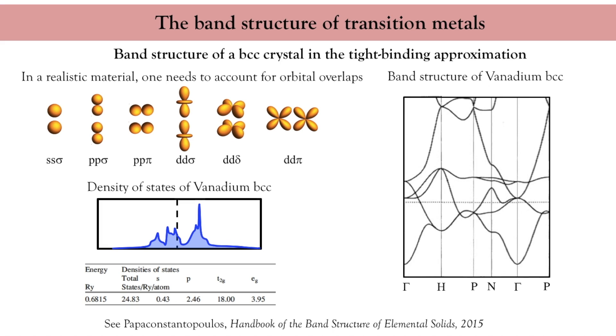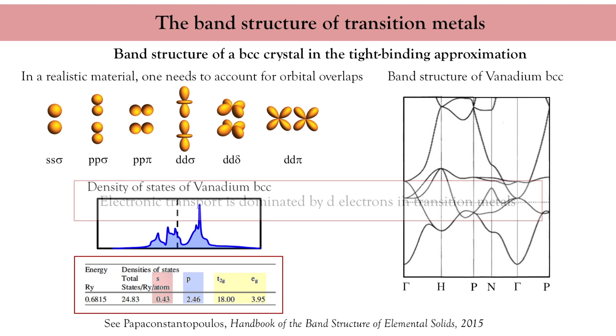Let us now take a look at the numbers. The band structure and density of states I show you here have been computed by Papaconstantopoulos in this reference. A remarkable result of this analysis is that if you look at the distribution between s, p and d orbitals at Fermi level, you realize that there are way more d electrons than p and s. So, in other words, electrical transport in transition metals is dominated by d electrons. This is a very important remark, and we'll get back to it later.